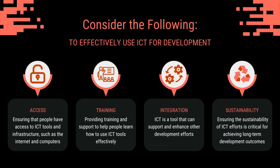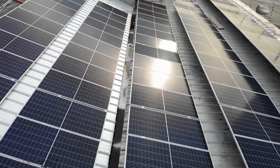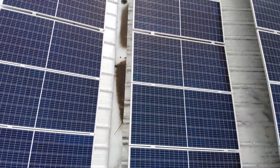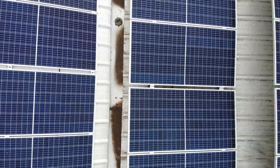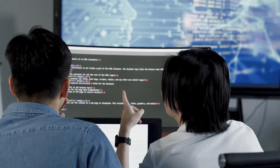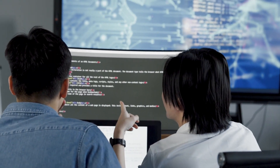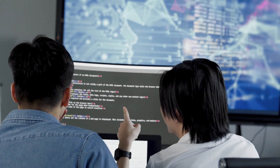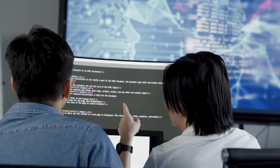Sustainability: ensuring the sustainability of ICT efforts is critical for achieving long-term development outcomes. This can involve a range of measures, including building local capacity, supporting local innovation, and fostering a supportive policy and regulatory environment. One way to ensure sustainability is to prioritize the use of open-source technologies and solutions. This can help to reduce the cost of implementing and maintaining these technologies, as well as ensure that the community has access to the source code and can continue to develop and improve upon it.